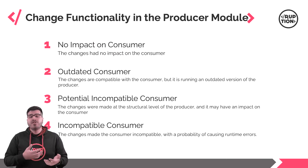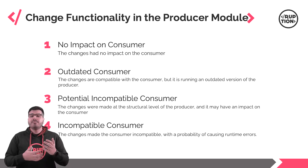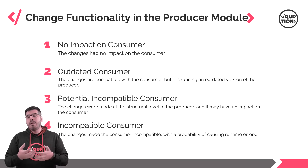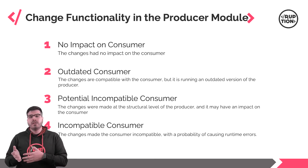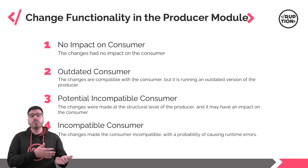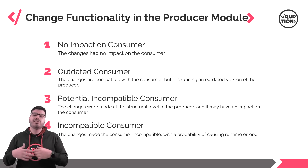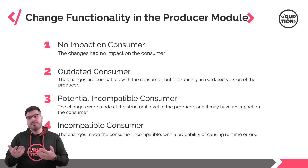By deploying a change in the producer module, OutSystems performs an impact analysis that can be one of the following. We can have no impact on the consumer — in this case, the changes had no impact on the consumer and the consumer does not need to be refreshed, and starts using the changes as soon as they are published.